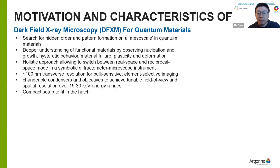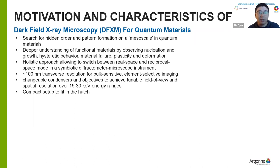For this dark field x-ray microscope, we want to easily switch between the real space and reciprocal space modes in the diffractometer instrument, and we want to get a spatial resolution around 100 nanometers from bulk-sensitive and element-selective imaging. Besides high resolution, we also want a zooming capability to switch from high spatial resolution mode to large field of view modes over a 15 to 30 keV energy range. Finally, we want the whole setup to be compact to fit in a roughly 4-meter hutch.